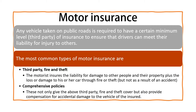Any vehicle taken on a public road is required to have a minimum level of insurance to ensure that drivers can meet their liability for injury to others. The most common types of motor insurance are third-party fire and theft insurance, and comprehensive policy insurance. Third-party insurance is the minimum level a person can have to drive on a road — it covers the motorist's liability for damage to other people and their property, plus loss or damage to the car through fire or theft, but not as a result of an accident.